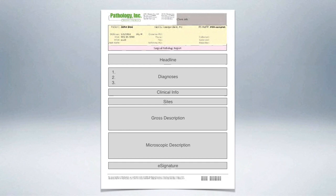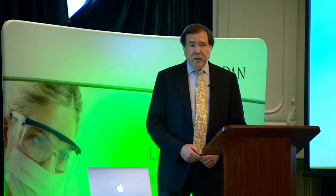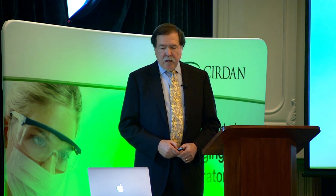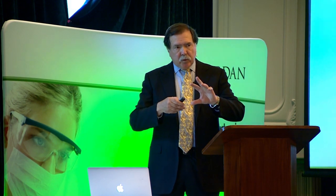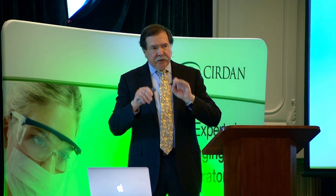There are lots of different companies out there that can help you create these reports — Cerner is one of them with their Ultra system. The easy parts of a report are headlines, diagnoses, gross and microscopic descriptions. The hard parts are putting images on reports, making patient-integrated reports, adding previous history, URLs, and whole slide imaging.